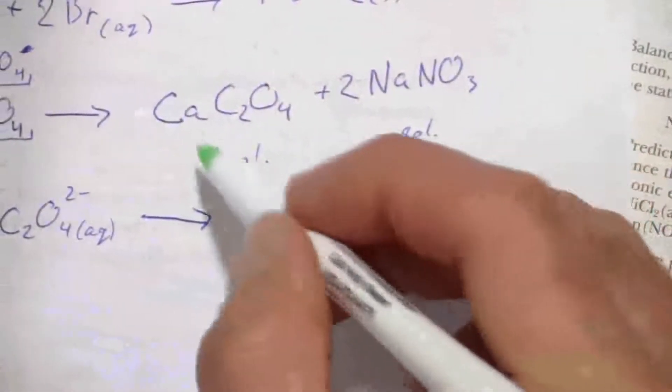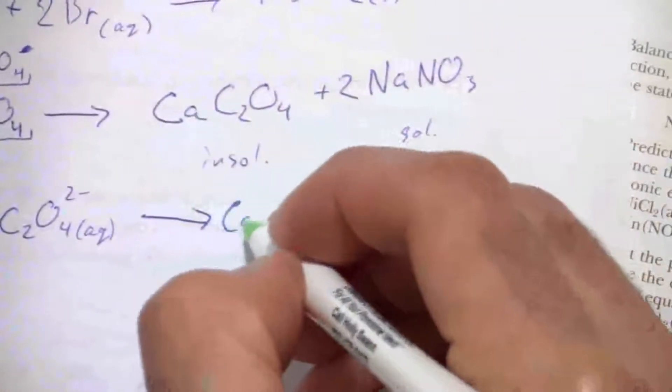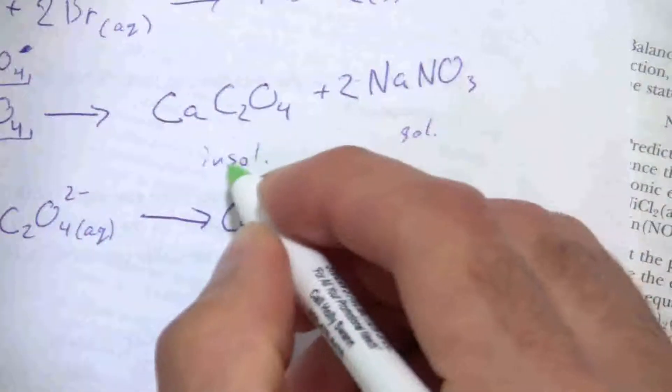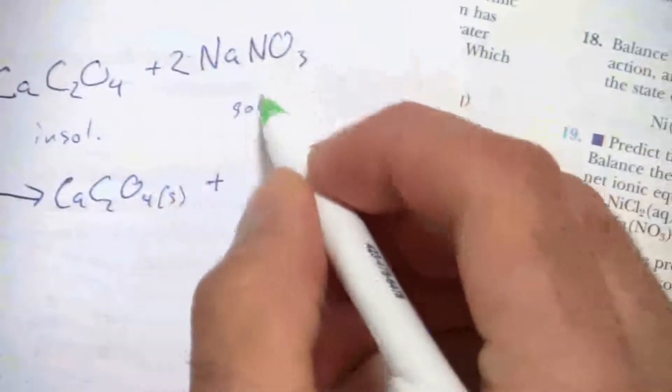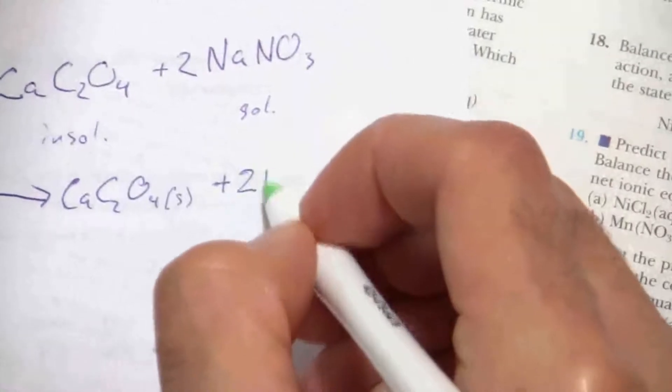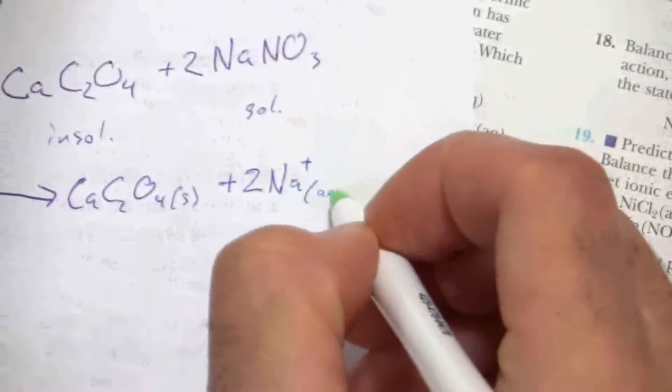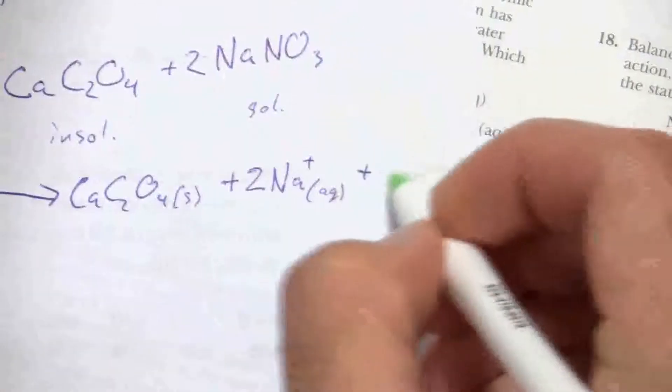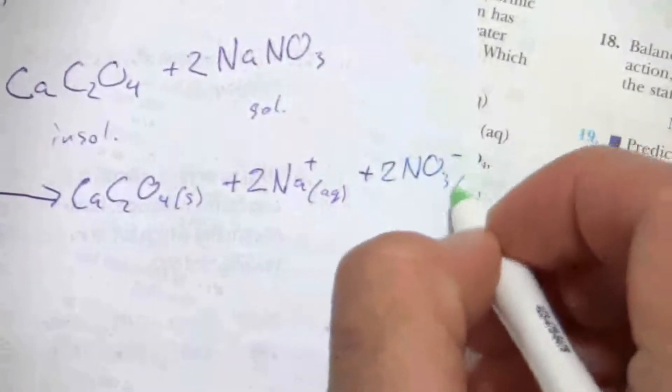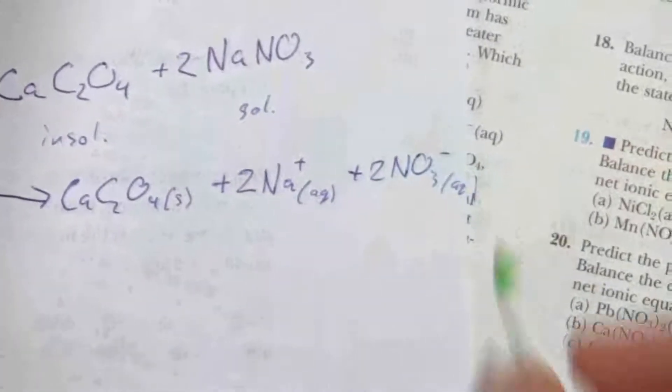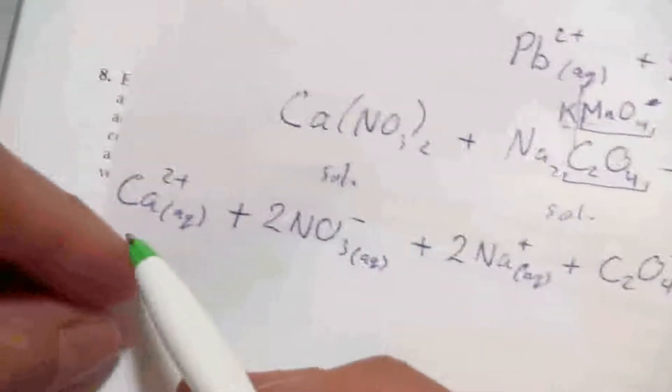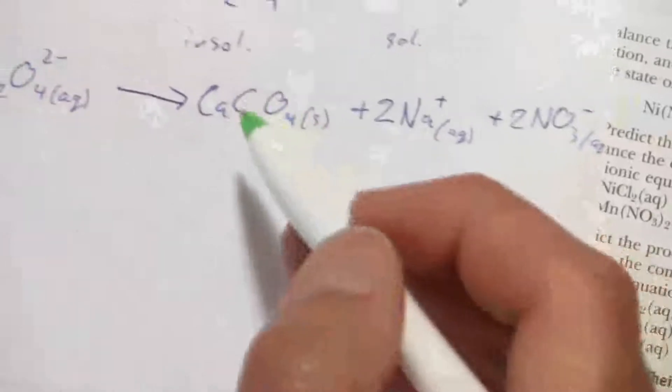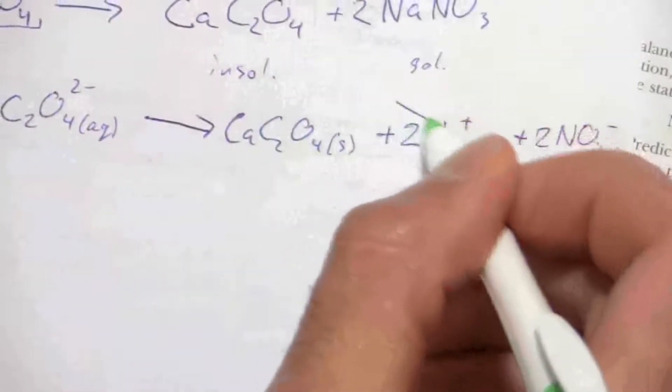The products to this reaction: I have my insoluble calcium oxalate. Since it's insoluble, I write that as a solid. And then I have a soluble compound here, so that breaks apart as two sodium ions and two nitrate ions.